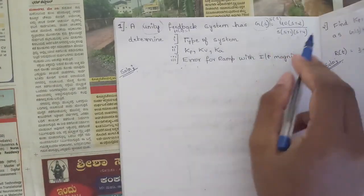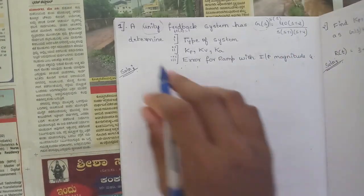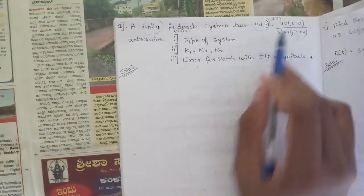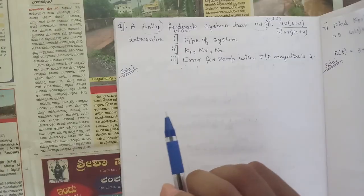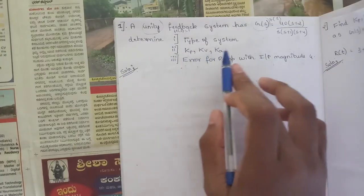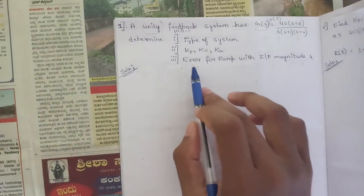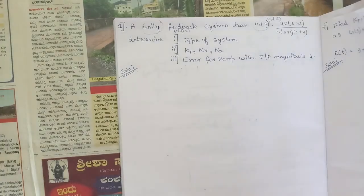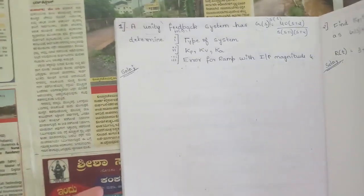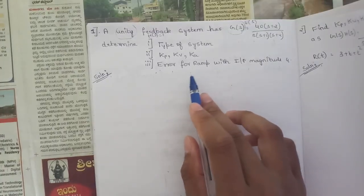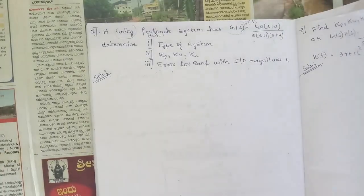We have three sub-questions: first, determine which type of system G(s)·H(s) is; second, find the values of Kp, Kv, and Ka; and third, find the steady-state error for a ramp input with magnitude 4.